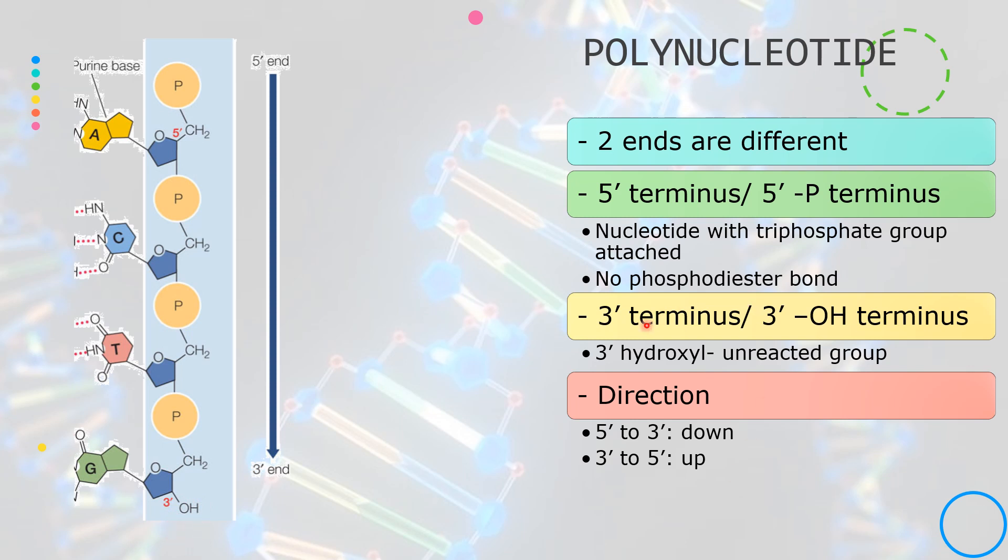This end is called the 3' terminus or the 3' hydroxyl terminus. The chemical distinction between the two ends means that the polynucleotides have a direction. In this picture, this is a 5' to 3' direction going down.